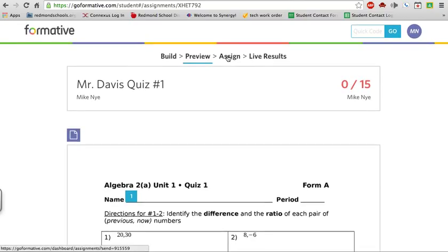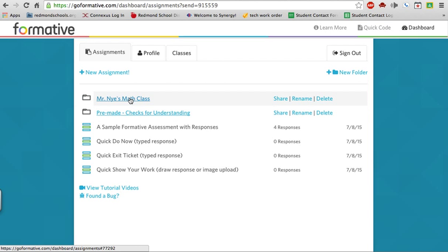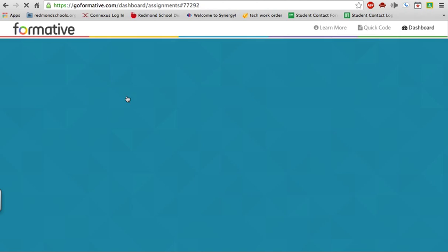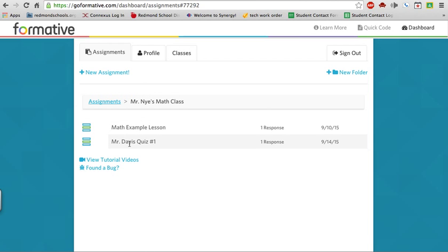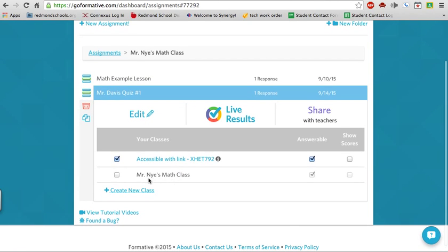And then you can assign it. So when I click on assign, I'm going to go into that assignment. So I'm going to go to my math class again. Here is the quiz that we just made. And from here, I can do a couple of things. I can assign it to a class. So if I had a class where kids were actually enrolled in that class, it would push it out to them, or I can give them a link.